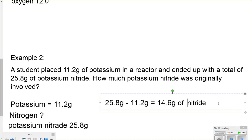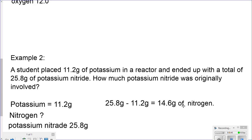So, to make things clear, 14.6 grams for nitrogen, 11.2 grams for potassium. When I add those two, I ended up with 25.8 grams of potassium nitride, which is the compound. I hope this helps you out.